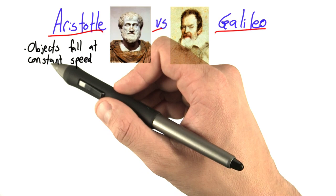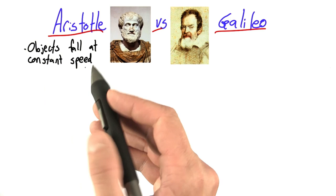Now, when Aristotle says constant speed, what he means is that the instant you release a ball, it's already traveling at the same speed that it will hit the ground with.